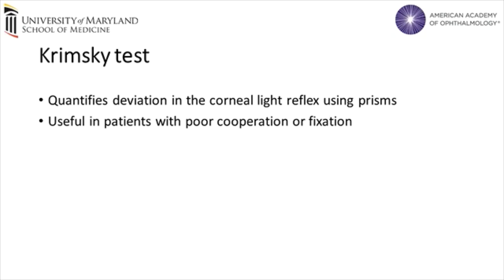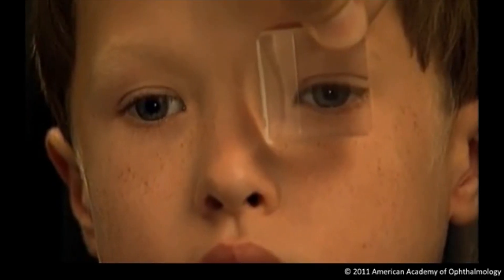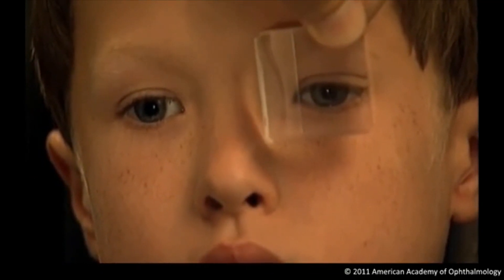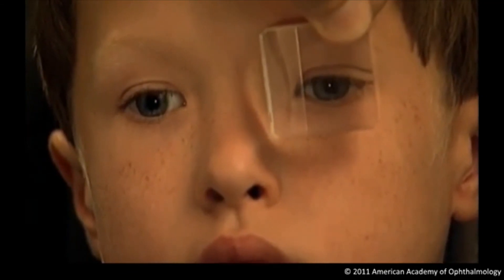The Krimsky test is used to quantify deviations using the corneal light reflex and prisms. While the patient is fixating on a light source, a prism is placed in front of the deviating eye to center the reflection. The test is repeated using increasing prism powers until the light reflection is centered on the deviating eye.